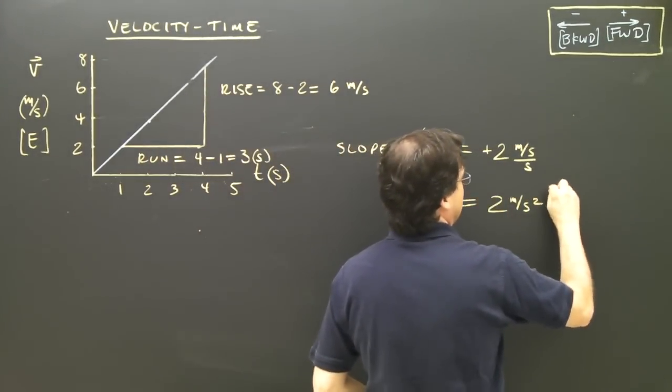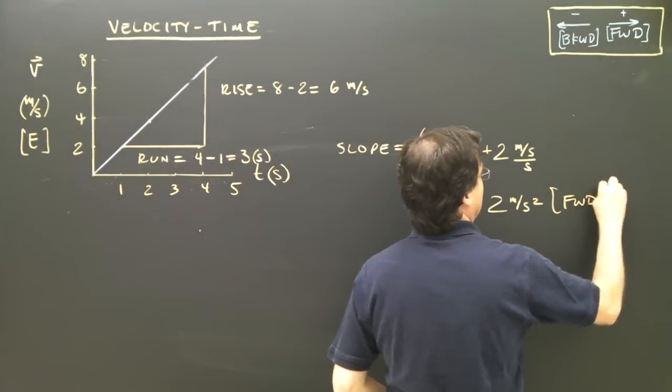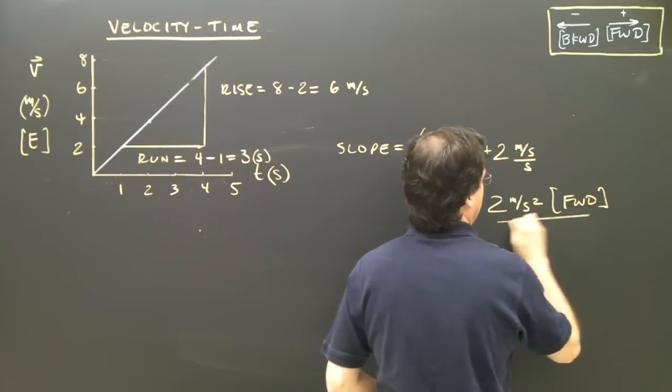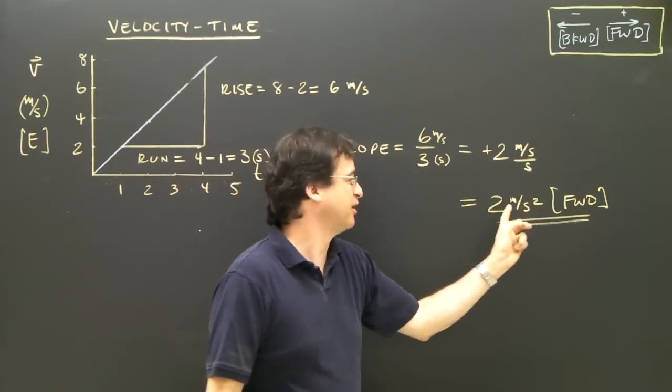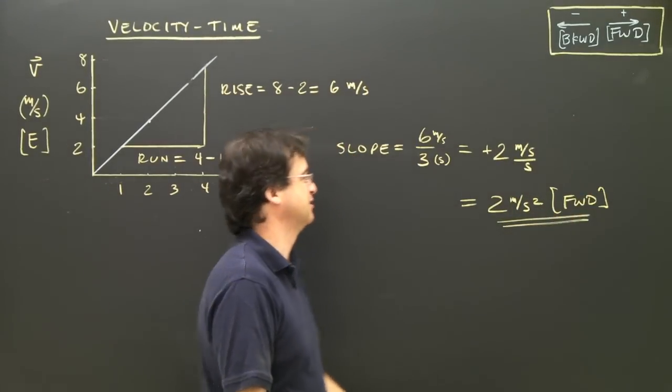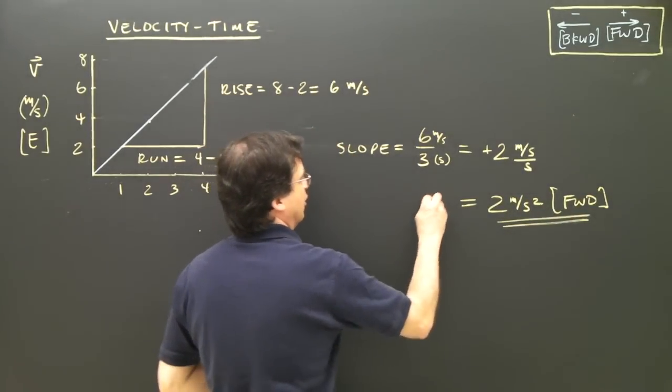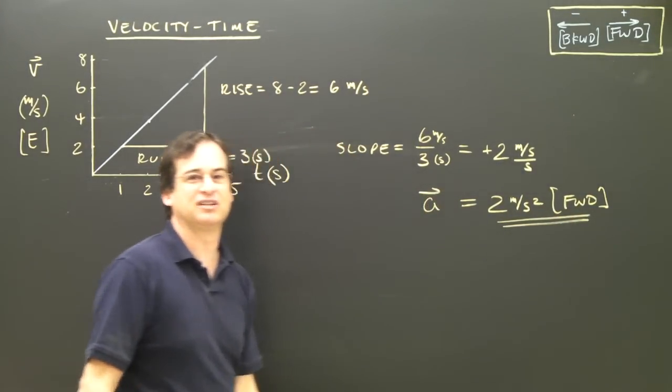And the positive means it's forward, so I write forward there. Or if this graph is labeled east, which it is, I probably should really write 2 meters per second squared east. So that is the slope, and the slope is equal to the acceleration.